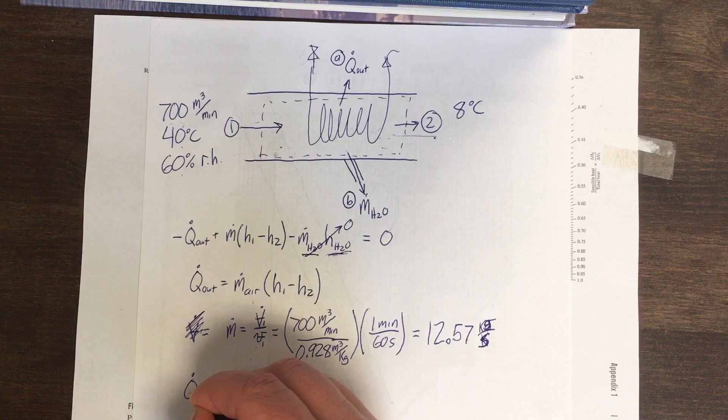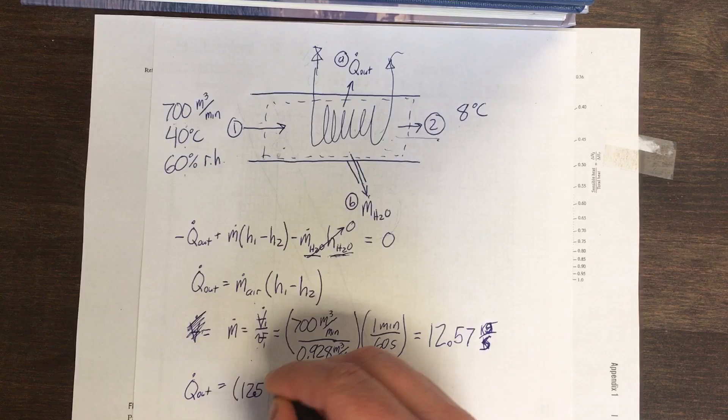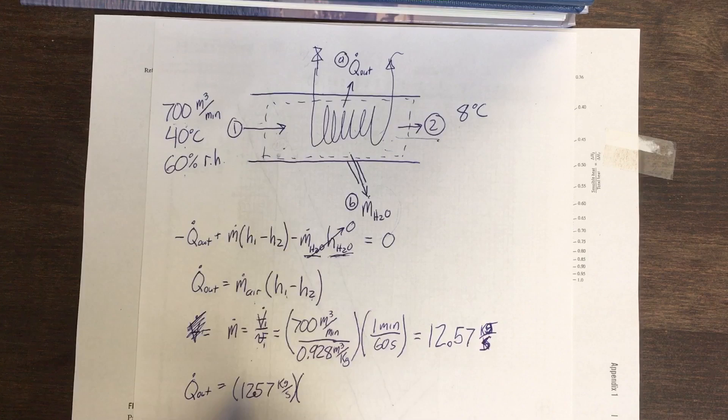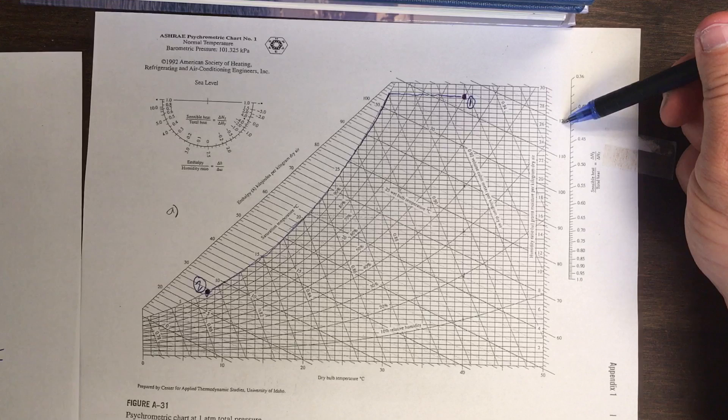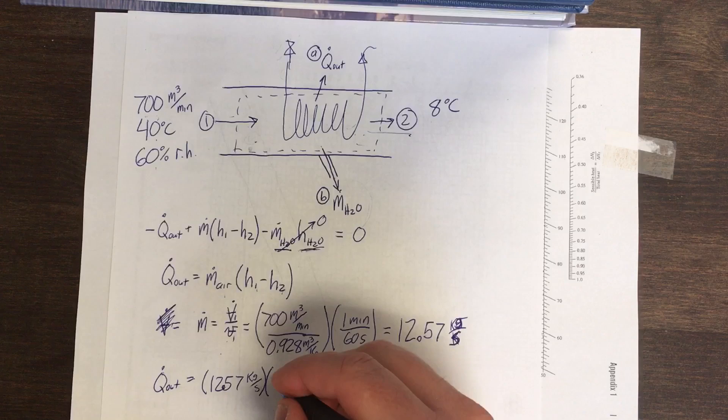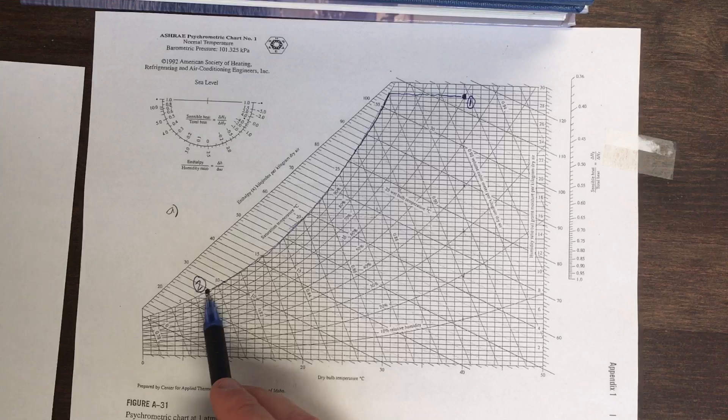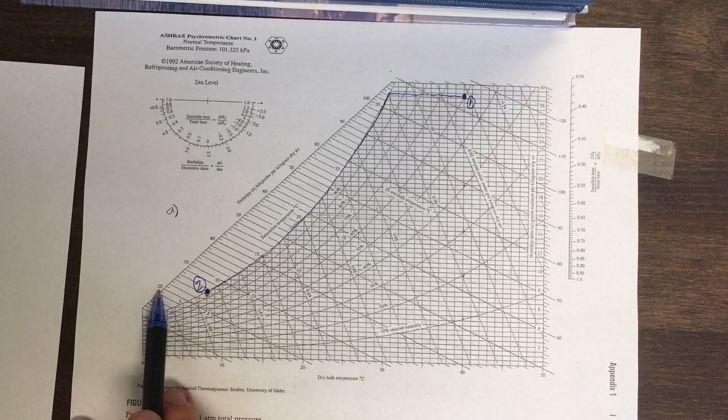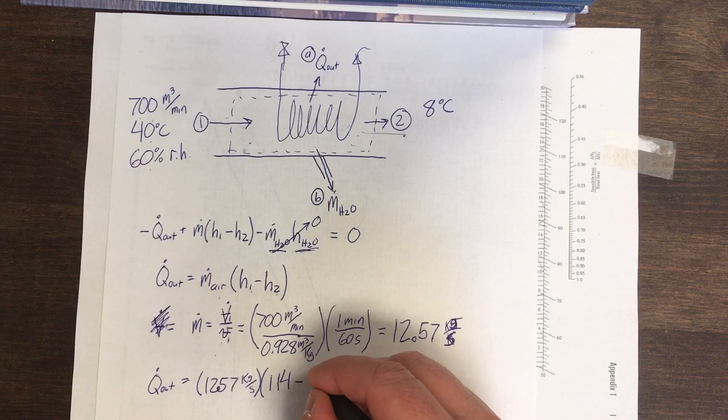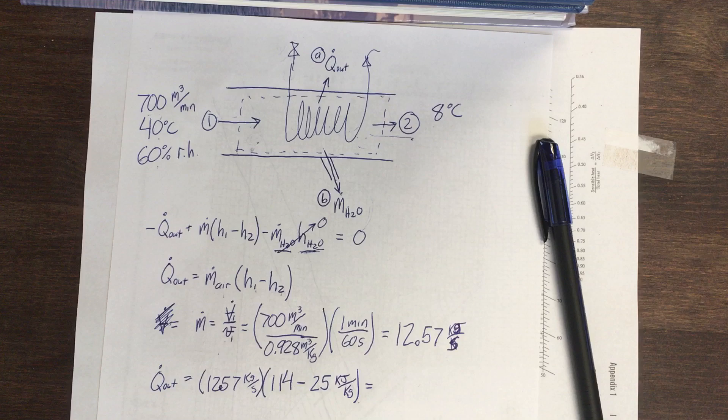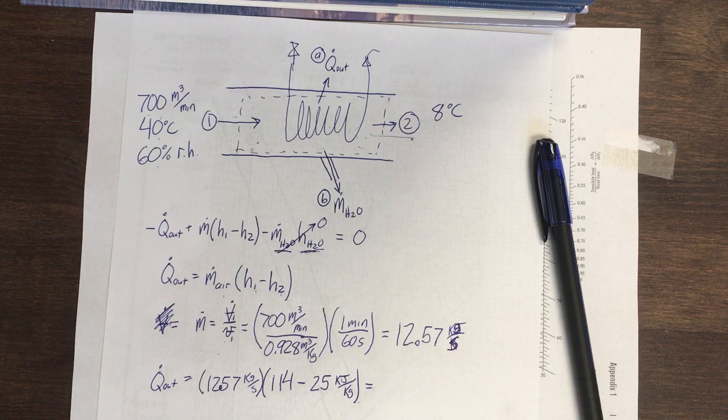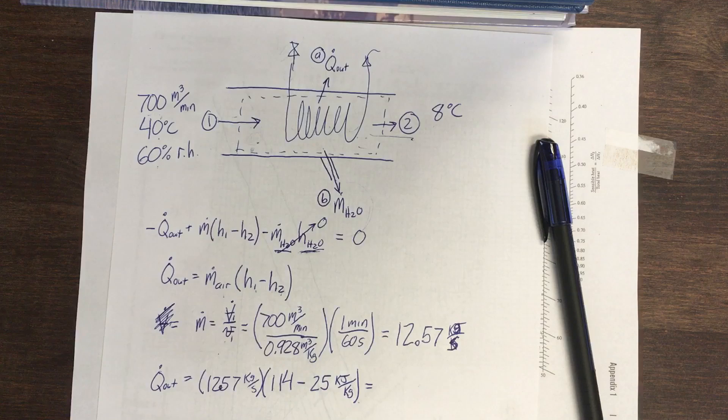Okay. The cooling load. The rate of heat out. Flow rate, 12.57. Times H1 minus H2. H1, we are way up here. There's 100. There's 100. This one's not really marked on this side, but it is over here. 110. And then there's 120. I'm going to call that 114. And at 2, let's see, 2, 4. We're pretty much halfway. We're at 5. It looks like 25. There's 20 and 30. 25. 1.19 kilowatts.